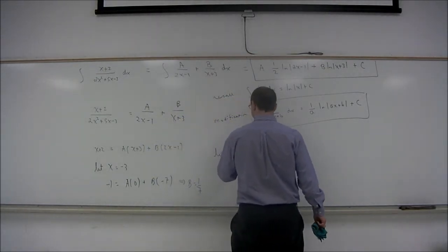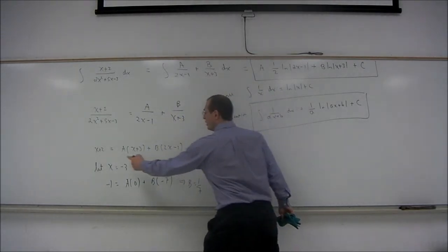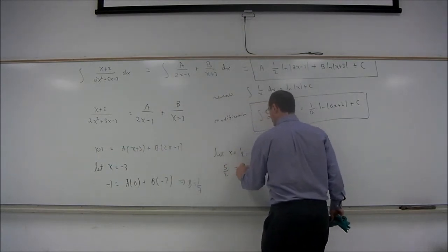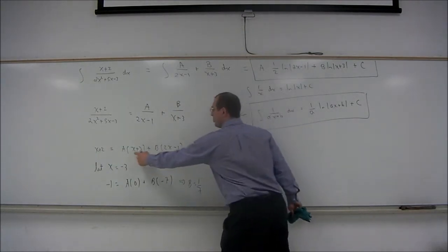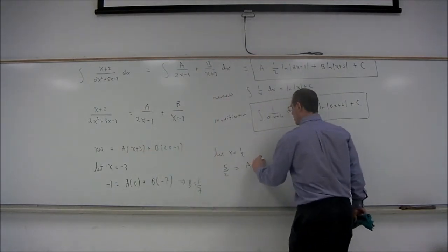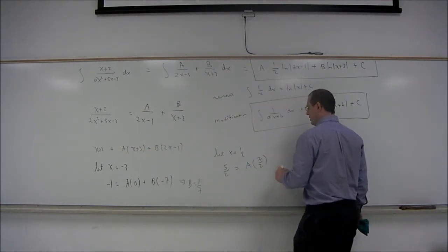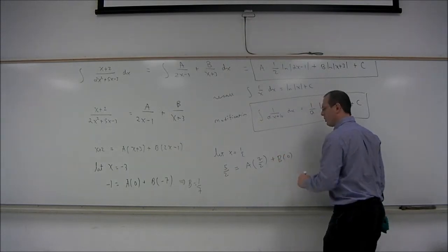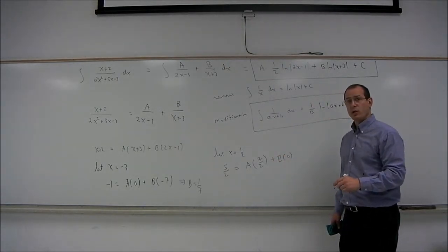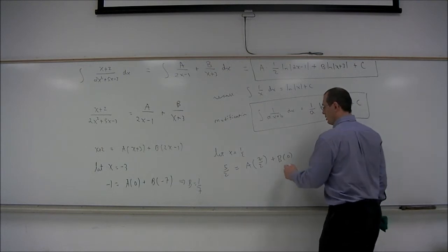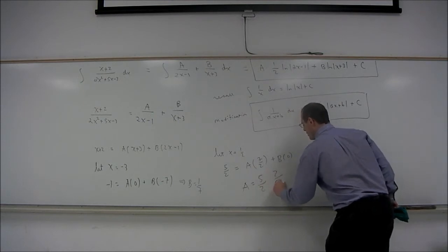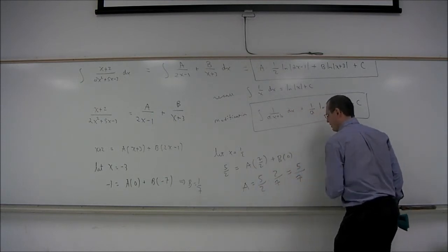So let x equal 1 half, then we get 1 half plus 2, which is 5 halves, is equal to a times 1 half plus 3, is 7 halves. And then, of course, it's b times 0. That's why we chose x equals 1 half. So a is equal to 5 over 2 times 2 over 7, which is 5 over 7.